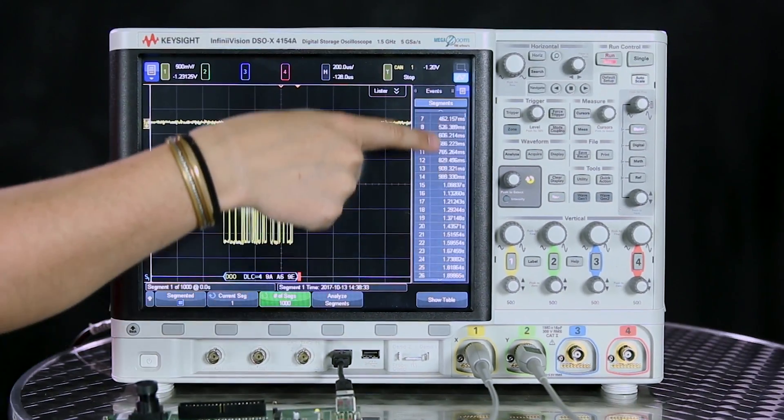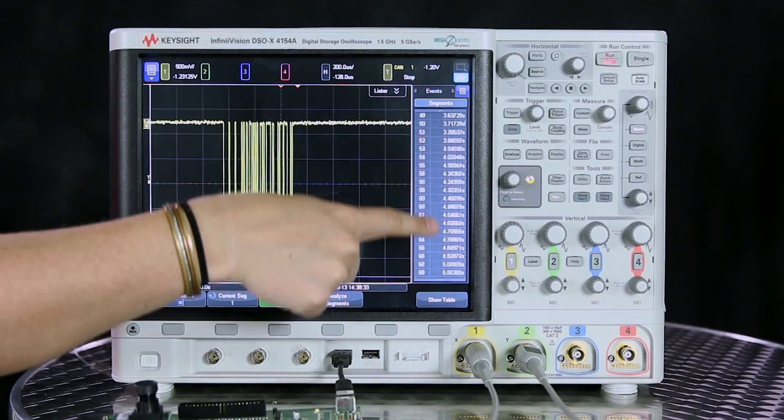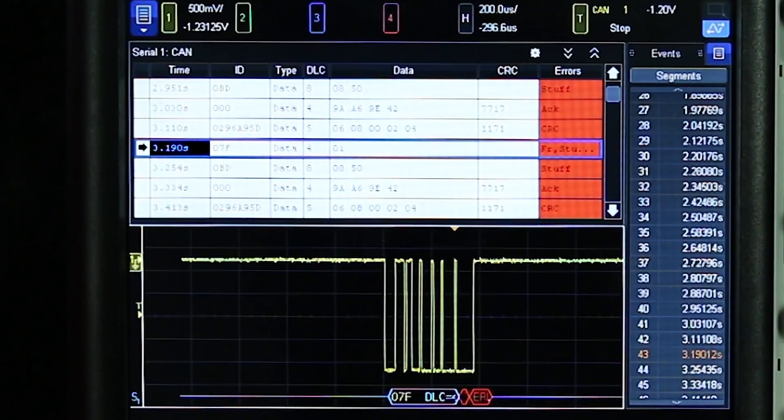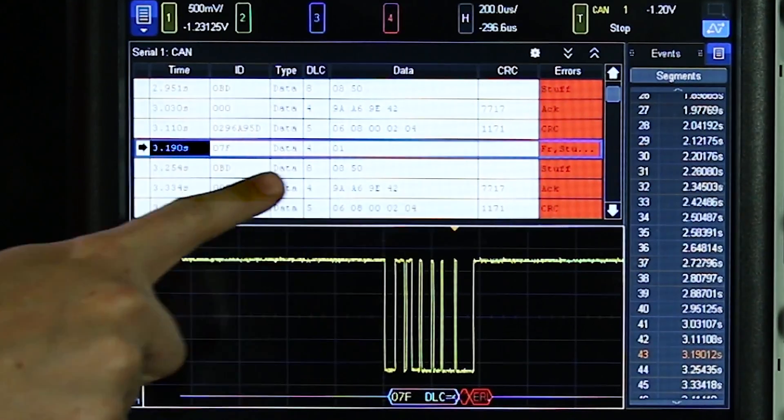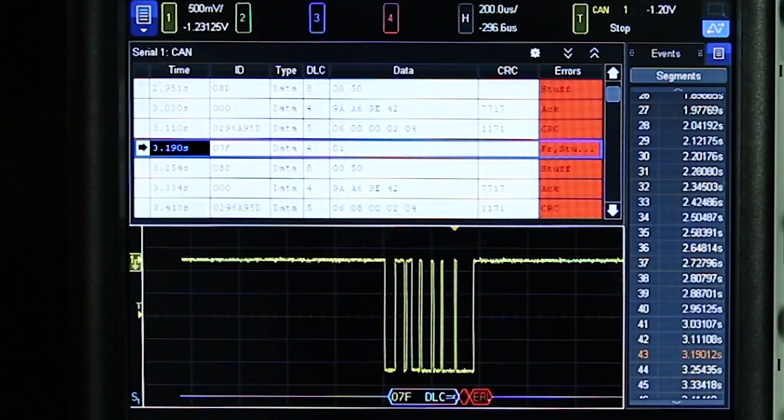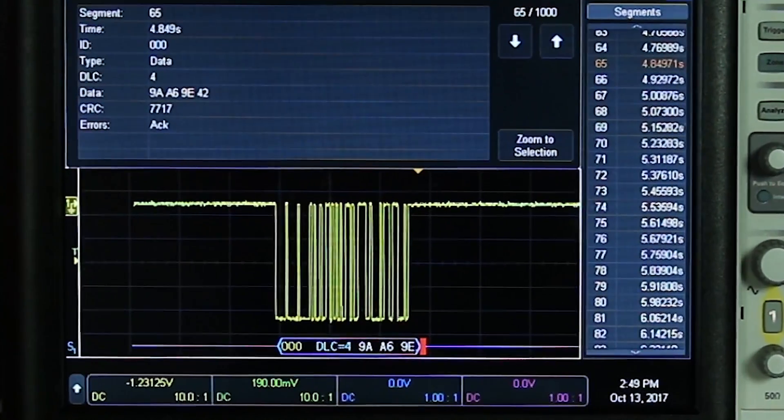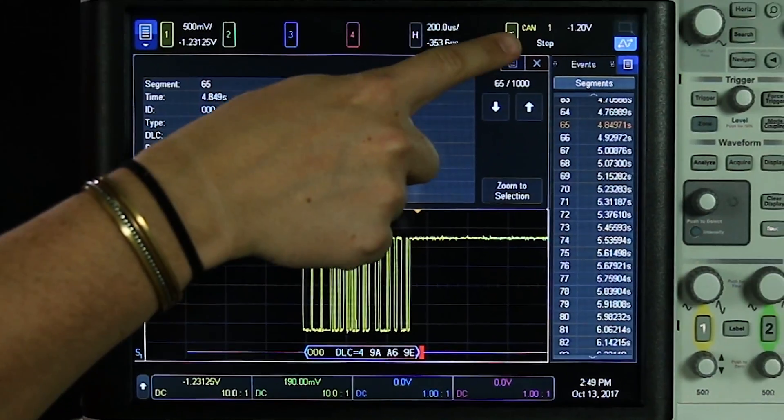Once it's complete you can see all the time tags pop up in the sidebar over here and you can also open the lister if you're working with serial buses. The lister will give you the time tag and decode information for each of the packets. If you double press one of the rows in the lister or in the sidebar the scope will open up that specific packet so you can analyze it even further.